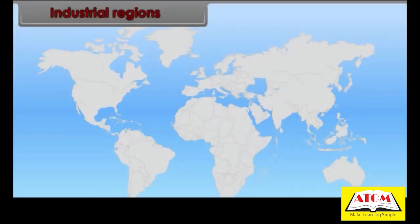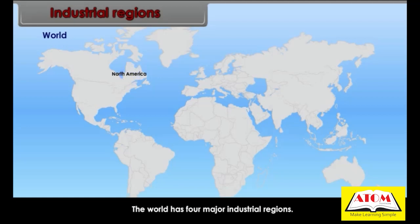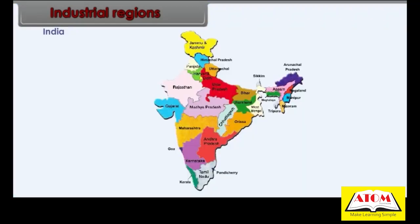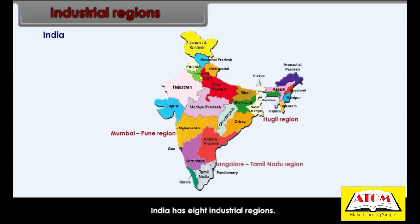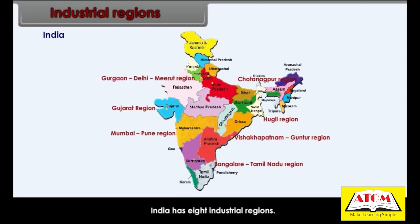The world has four major industrial regions: the eastern part of North America, western and central Europe, eastern Europe, and eastern Asia. India has eight industrial regions: Mumbai-Pune region, Hooghly region, Bangalore-Tamil Nadu region, Gujarat region, Chhota Nagpur region, Vishakhapatnam-Guntur region, Gurgaon-Delhi-Meerut region, and Kollam-Thiruvananthapuram region.